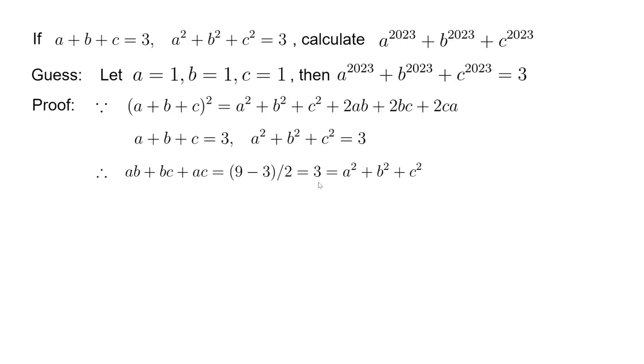It happens to be 3 again, and then we can connect it with a squared plus b squared plus c squared. We want to do this because they are of the same degree—they're all of degree 2. So we can try to come up with some interesting conclusion.